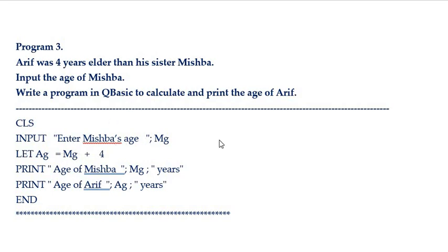Therefore, in the program, how will you input the age of Mishba? Here I am showing you one more way — one more style of taking input. That is like this: INPUT, then enter Mishba's age within quotation marks with a semicolon as a separator, and the variable chosen is Mg — Mishba's age. And therefore, Arif's age is Mishba's age plus 4, because he is 4 years elder.